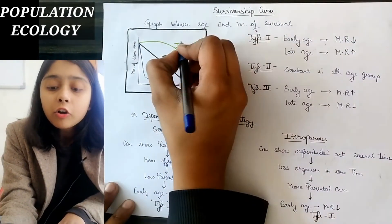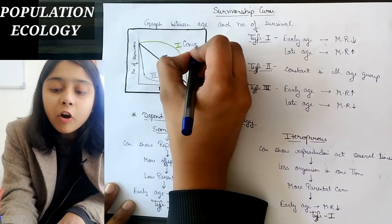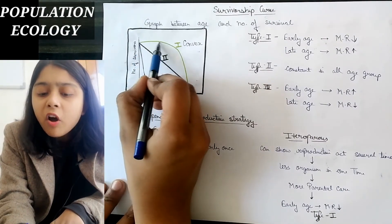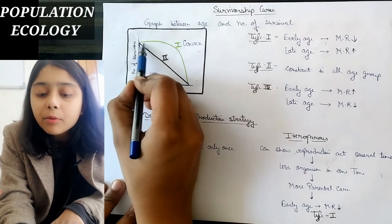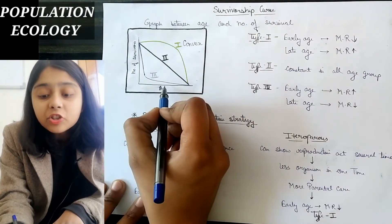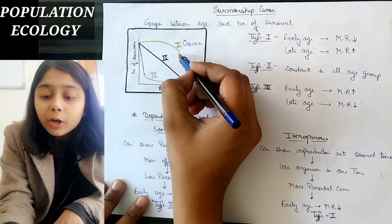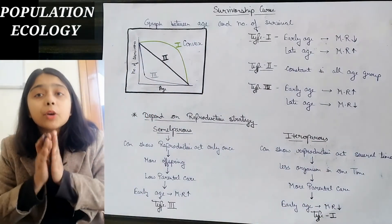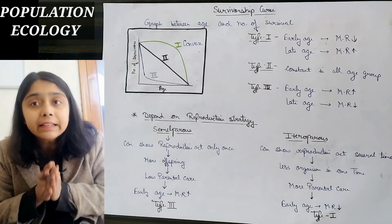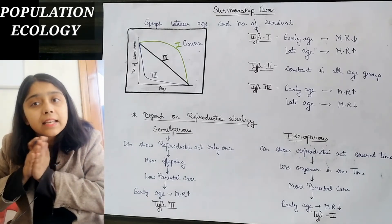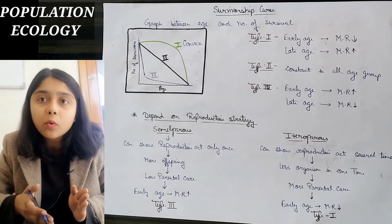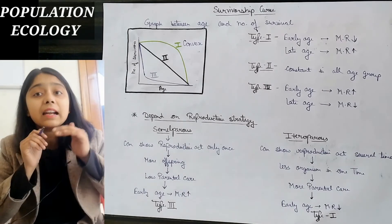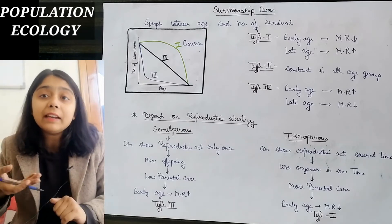First is the convex curve. In the convex curve, as age increases, the number of survivors is almost constant in early age — meaning the mortality rate was low in early age. But as age increases further, the number of survivors decreases, meaning the mortality rate has increased. So in early age, the mortality rate is low, but in late age, the mortality rate increases.